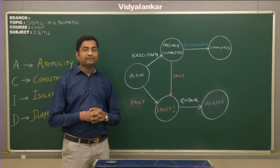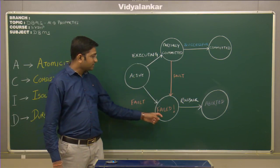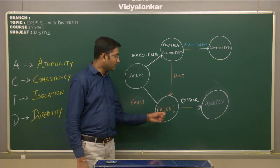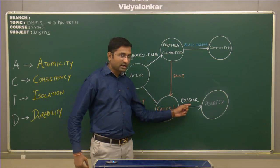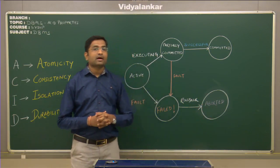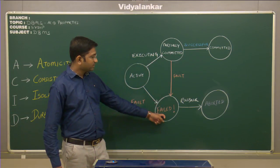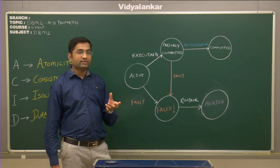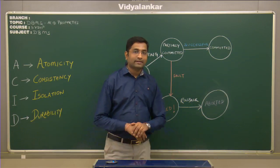For example, if suddenly the network fails, the transaction will go into another state known as failed state because a fault has occurred. Since a fault has occurred, it has entered the failed state and it now has to be rolled back so that it can be considered as an aborted transaction. After the failed state, all the queries of the transaction which were completed are rolled back so that it goes back to the aborted state.